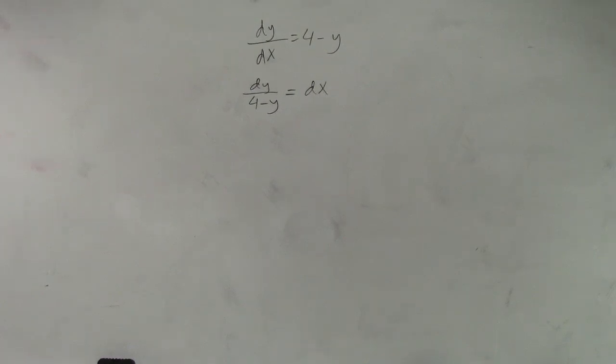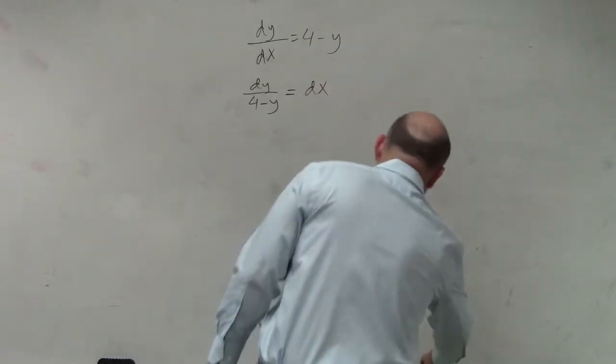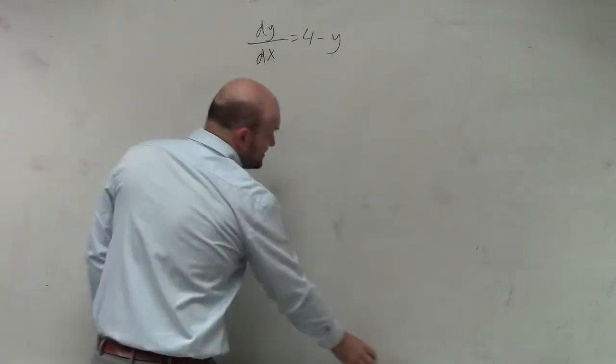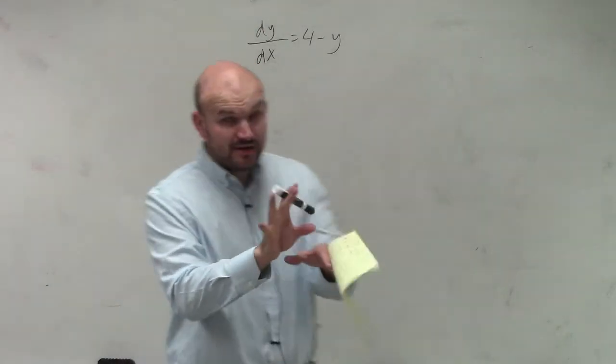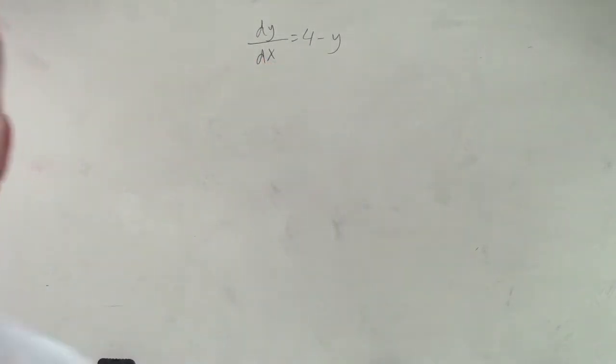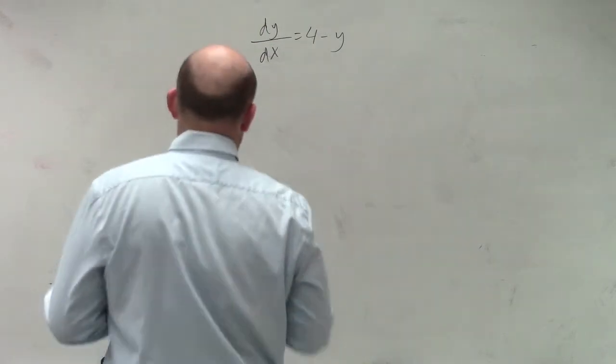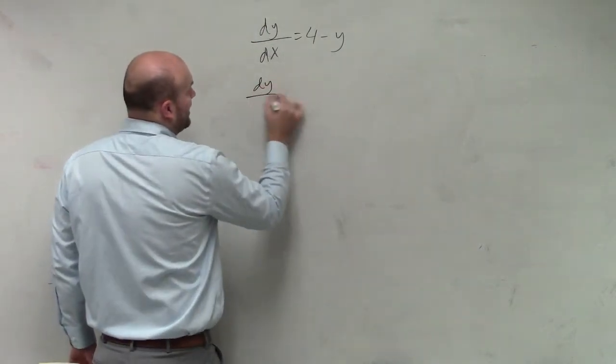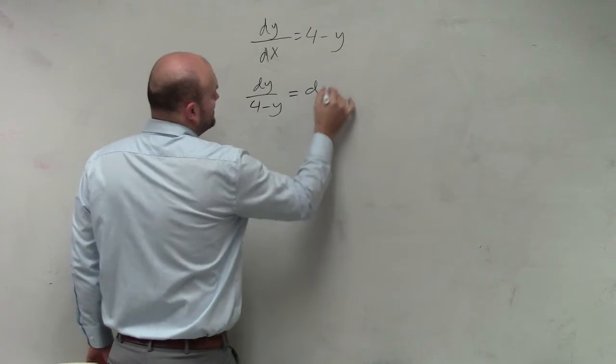All right. So in this example, again, we've got to make sure we separate our variables. We can only separate our variables by multiplication and division, not addition or subtraction. But fortunately, we can just multiply our dx and divide by our 4-y on both sides. So we have dy over 4 minus y equals dx.